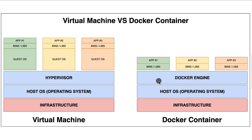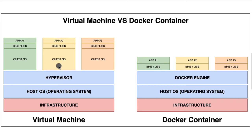Regarding portability, Docker containers are highly portable as they encapsulate application dependencies, configurations, and runtime environment. You can easily move and run containers on different hosts provided they have Docker installed and compatible host operating systems. Virtual machines are less portable due to their dependency on the hypervisor and underlying hardware, though technologies like Open Virtualization Format can help achieve portability. On security, Docker containers share the OS kernel which may expose certain kernel-level vulnerabilities, though Docker offers security features like namespaces, cgroups, and seccomp profiles to mitigate risks.